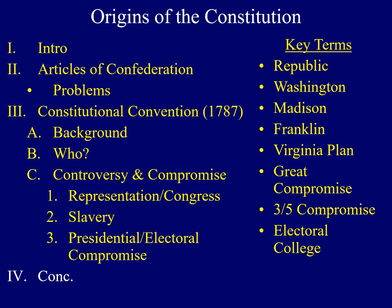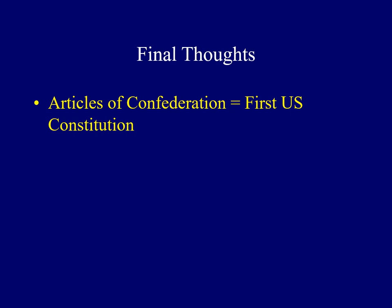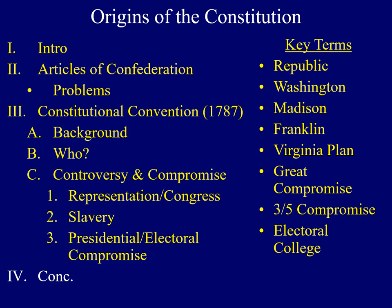Hopefully that explanation wasn't too confusing. To sum up some of the key ideas from this lecture: first, the Articles of Confederation was the name of the first Constitution of the United States. You should also be able to identify some of the key individuals who shaped events at the Constitutional Convention. And finally, you should be able to explain three controversies from the convention itself and evaluate which you think was the most important. That ends the first lecture for our class. I hope you learned something new and we'll see you online. Have a great day, everybody.